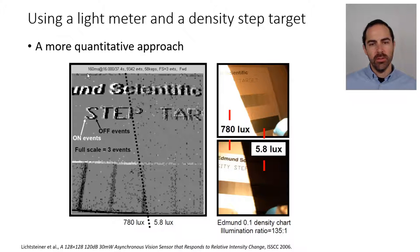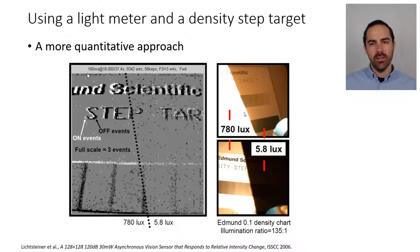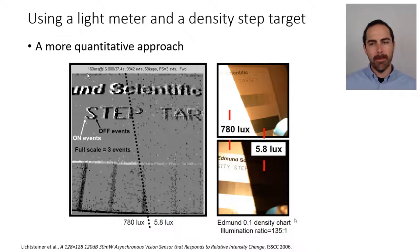This is a more quantitative approach from the conference paper that gave rise to the seminal paper on the DVS. They are using a light meter and a density step target — this Edmund chart. They cast a shadow so that half the scene is illuminated at 780 lux and the other half is much darker. The ratio between the light on one side to the other is about 135, yet there is not much difference in the way we see the letters. We see a bit more noise — more noisy events on the right — because there are more noisy events in darker areas.